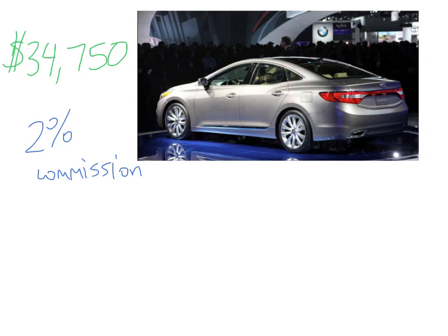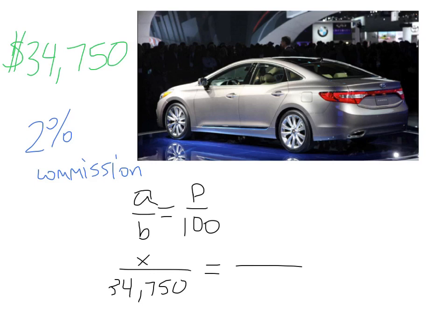All right, hopefully you set up the percent proportion, the A over B equals P over 100. Well, what's the part? Well, the part A is what we don't know. That's the actual dollar commission amount, so we're going to use an X. And put that over the base, which is $34,750. That's equal to P. Well, P is percent, and we know the percent, and it's always over 100.